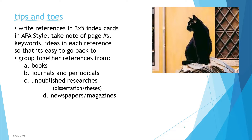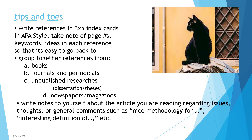Some tips in writing your RRL: You could use 3x5 index cards and already put your notations in APA style to make it easier for your references later on. Group together references from books, journals and periodicals, unpublished researches, newspapers and magazines. If you want to be completely digital, I suggest that you open up a different file, like a Word file, where you put all your notes separately in categories, also in APA style. Write notes to yourself about the article you are reading regarding issues, thoughts, or general comments, such as nice methodology or interesting definition.